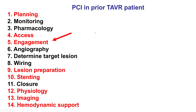TAVR can affect several of the 14 steps of percutaneous coronary intervention, with the step being the most affected being coronary engagement, as the aortic valve prosthesis sits often between the coronary ostia and the catheters.